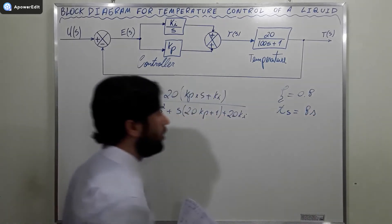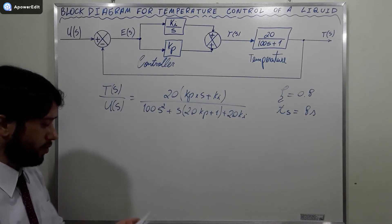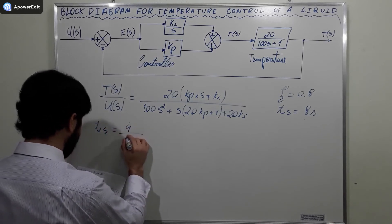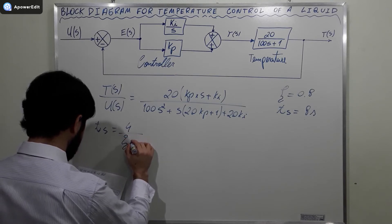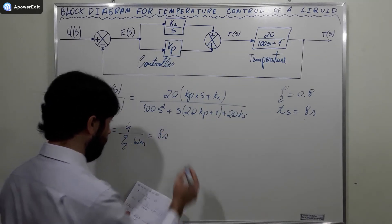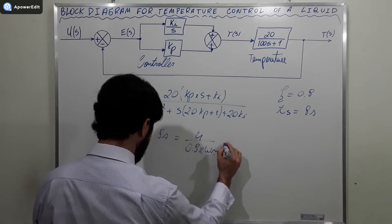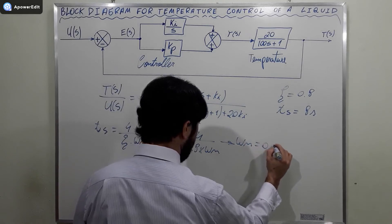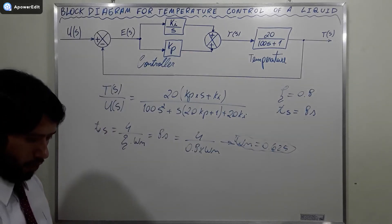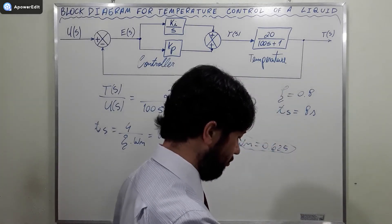The specifications are: damping factor ζ = 0.8 and settling time Ts = 8 seconds. Using the formula Ts = 4 / (ζ × ωn) = 8 seconds, and substituting ζ = 0.8, we get 4 / (0.8 × ωn) = 8, which gives ωn = 0.625. This is the first parameter we needed to find.